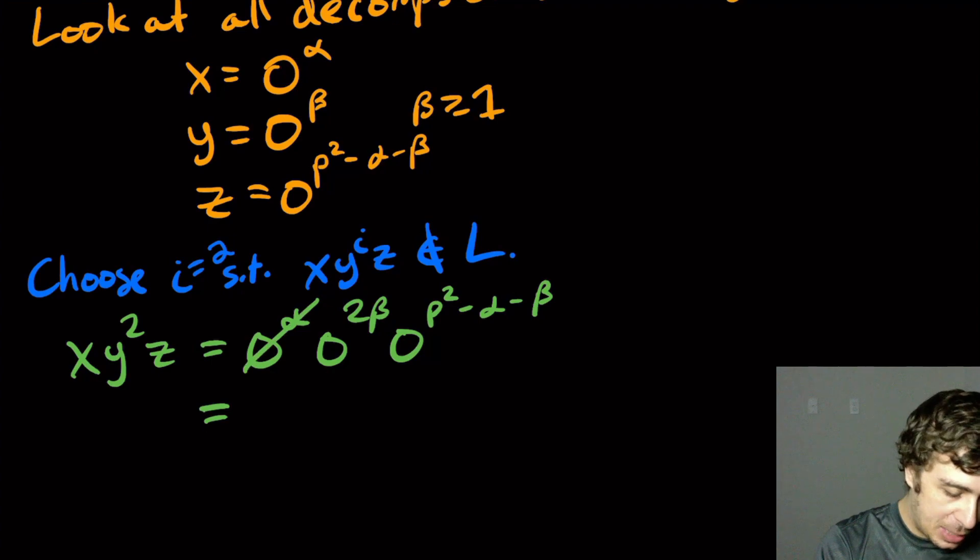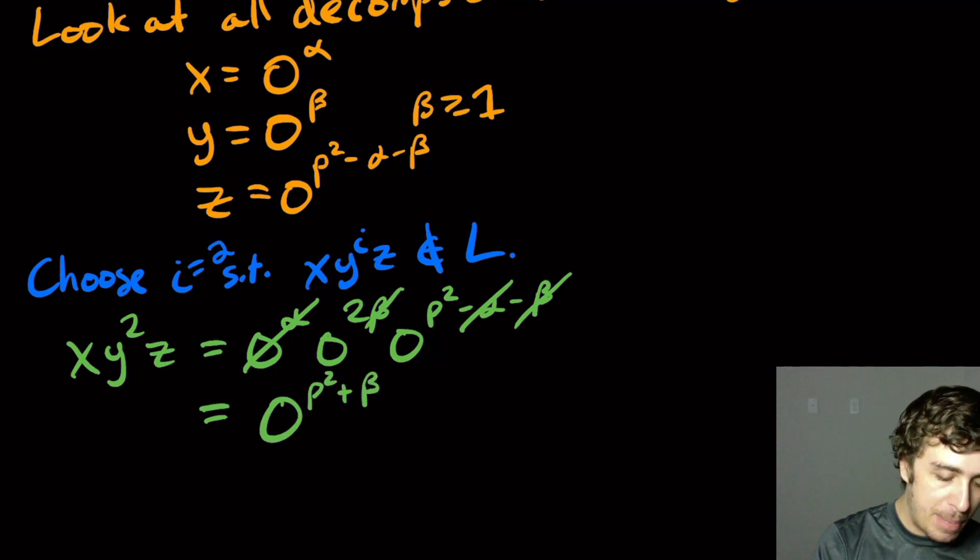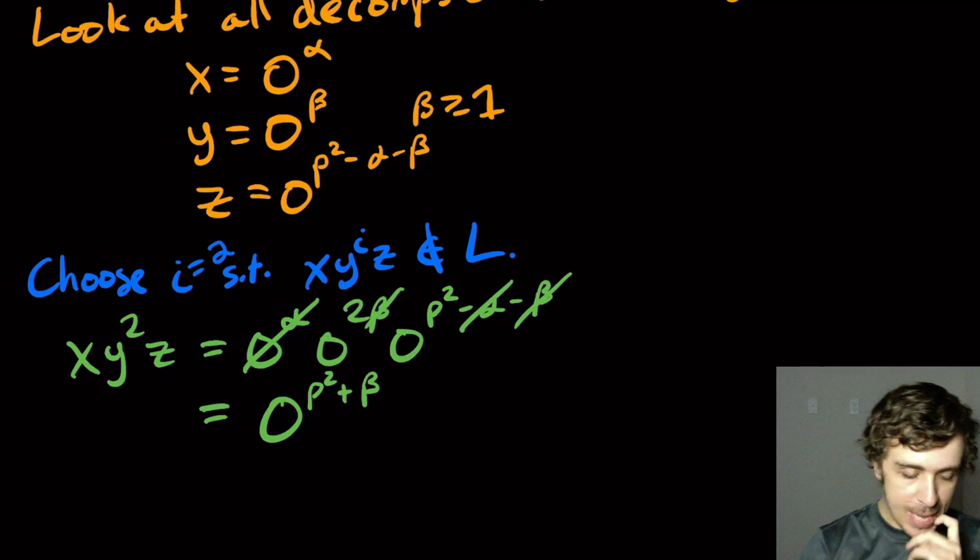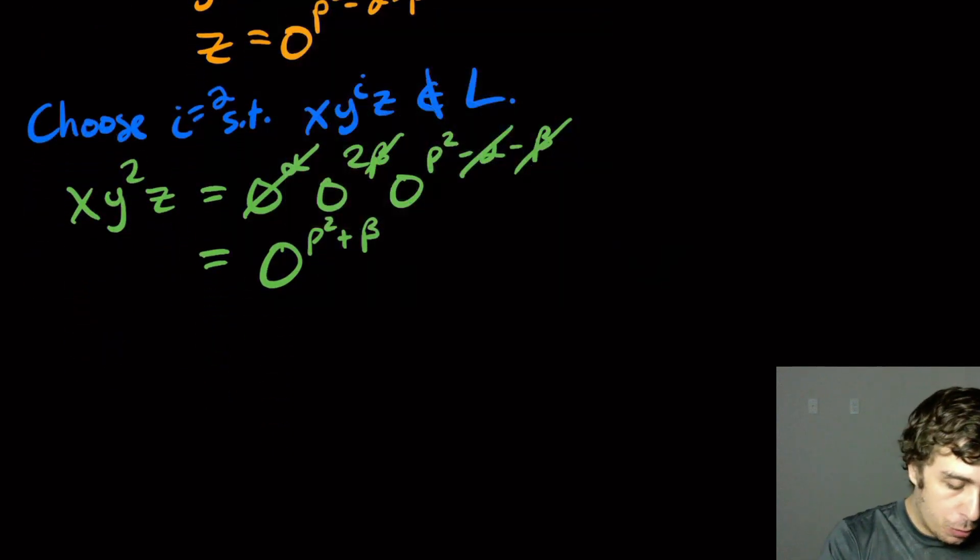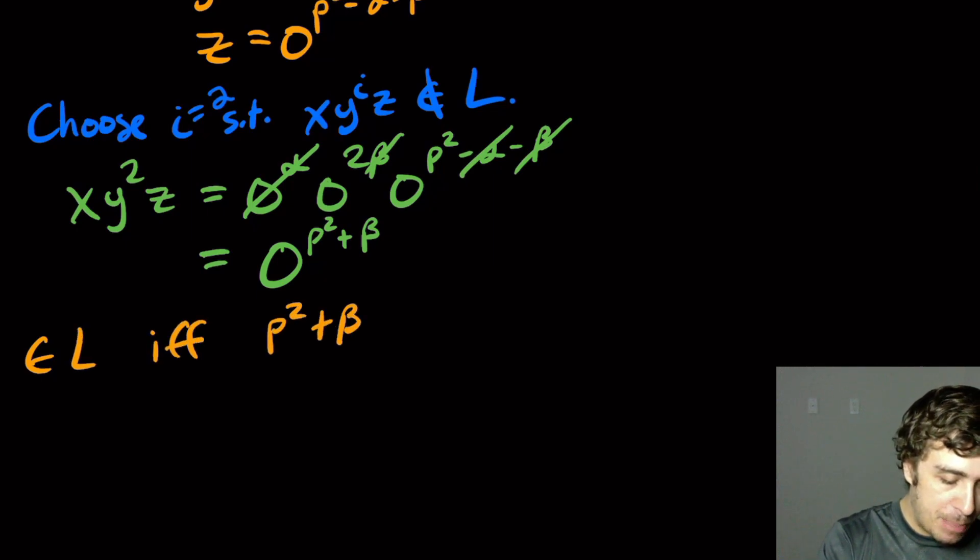And then when the dust settles, the alphas get killed off, and one of the betas gets killed off, so I'm going to have p squared plus beta here. Okay, and what we need to show or prove is that this thing is in L if and only if p squared plus beta is a perfect square.